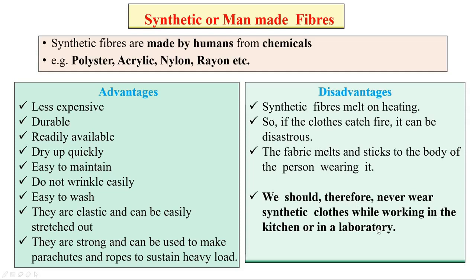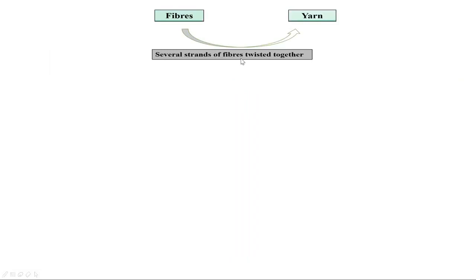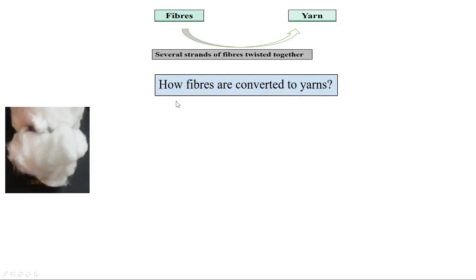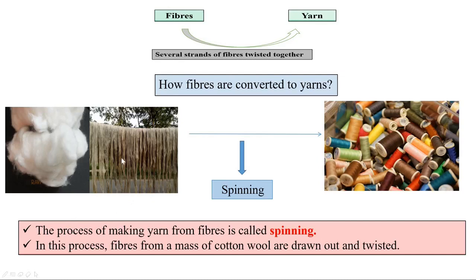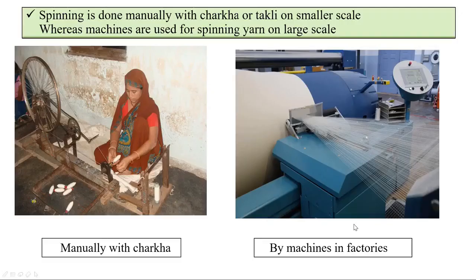We already know that several strands of fibers twisted together make yarn. But how are fibers converted into yarns? The answer is spinning. The process of making yarn from fibers is called spinning — fibers from a mass of cotton or wool are drawn out and twisted. Spinning is done manually with a charkha or takli on a smaller scale, whereas machines are used for spinning yarn on a larger scale.